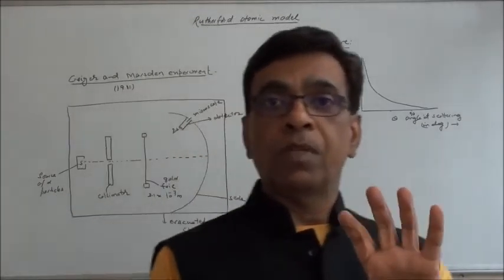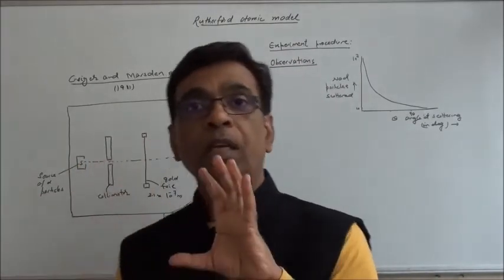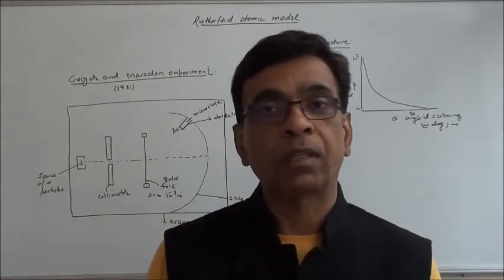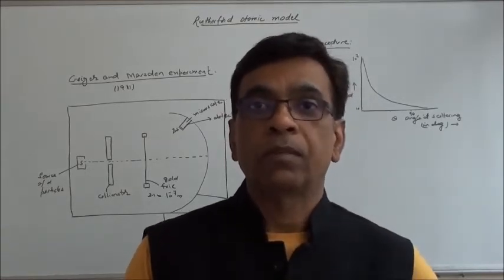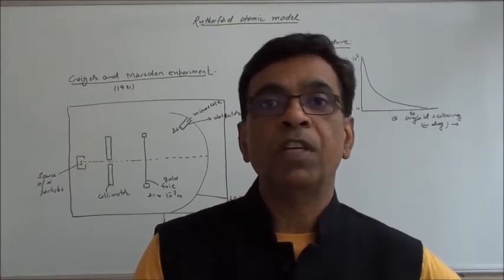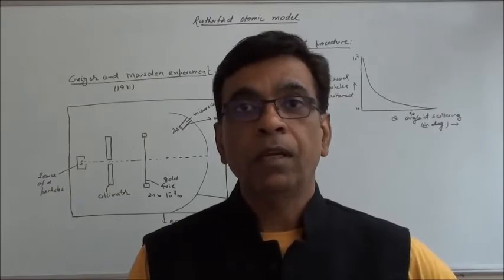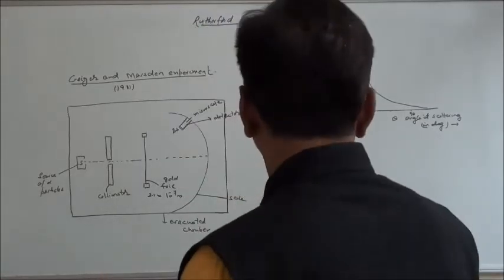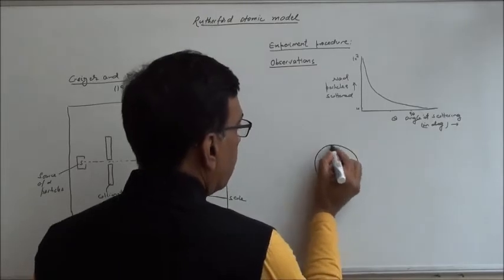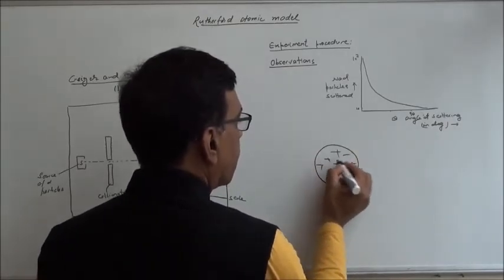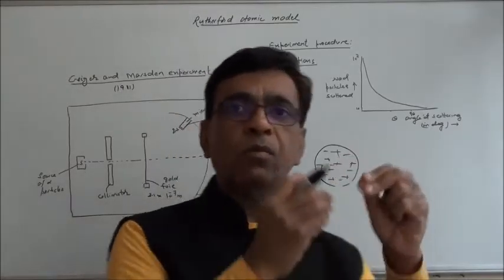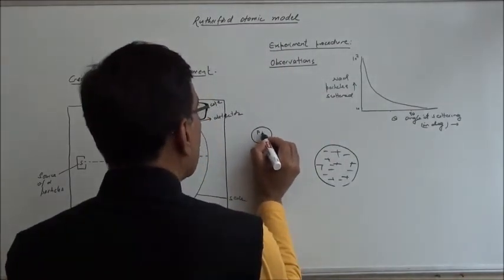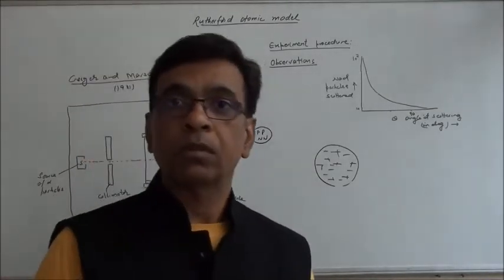Now, if we see these observations — at the time this experiment was performed, the accepted model was Thomson's model, where both positive and negative charges are distributed throughout the entire atom. If we take that model, we can check whether we can explain all three observations on its basis. An alpha particle is an assembly of two protons and two neutrons.